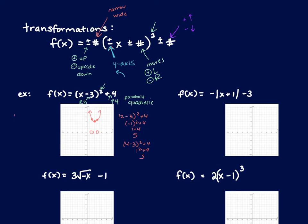Domain on this parabola: the arrows point left and right, so it's negative infinity to positive infinity. The range: the lowest y is 4 and it points to positive infinity, so the range is [4, positive infinity).